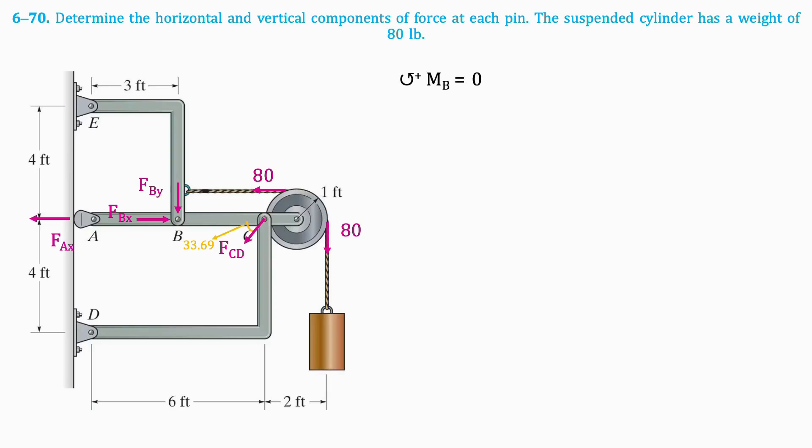Now we'll take the moment about point B. First, we need to identify certain lengths that will be used as lever arms later on. We're given that the distance from D to C is 6 feet,